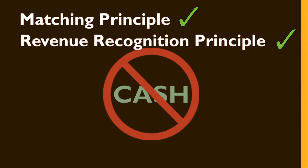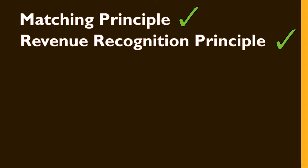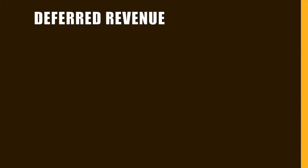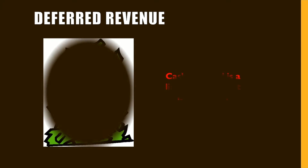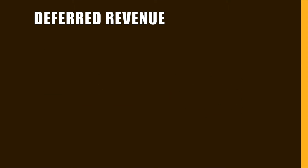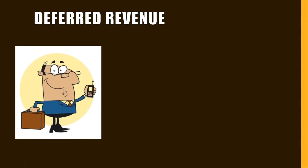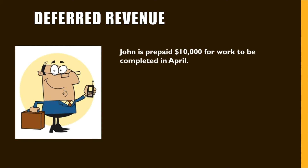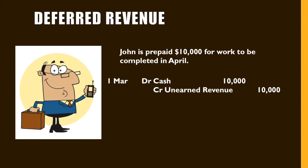There are four scenarios that illustrate the necessity of adjusting entries. The first is known as deferred revenue. This occurs when cash is received before the firm's revenue has been earned. Suppose John the lawyer is prepaid $10,000 on the 1st of March for work to be completed in April. Since he has not yet provided the service he has been paid for, the $10,000 cannot be recorded as revenue but is rather recorded as a liability for the month of March.